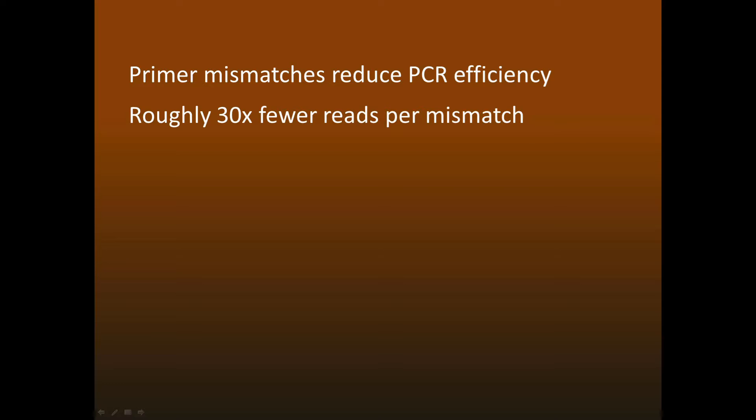Mismatches between the gene and your PCR primers reduces amplification efficiency. As a rule of thumb, you'll get something like 30 times fewer reads for each mismatched position. With commonly used primers, around 10% of species have at least one mismatch.